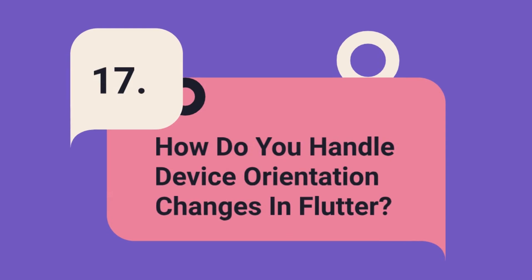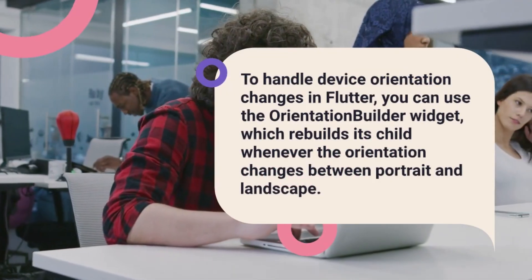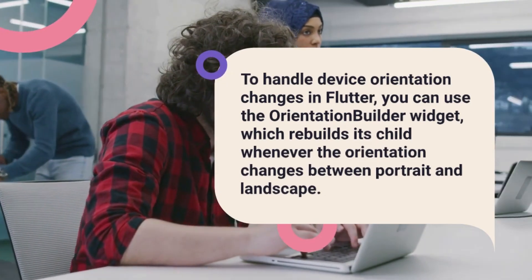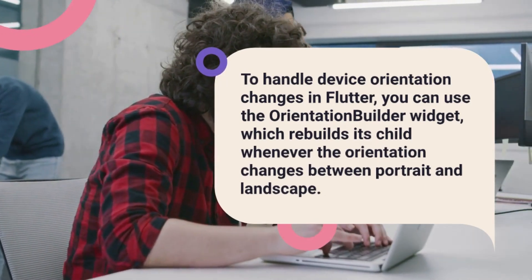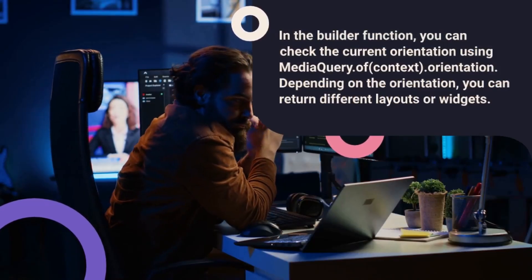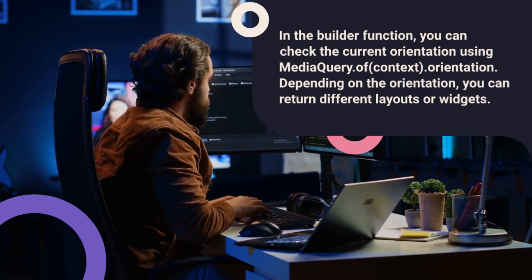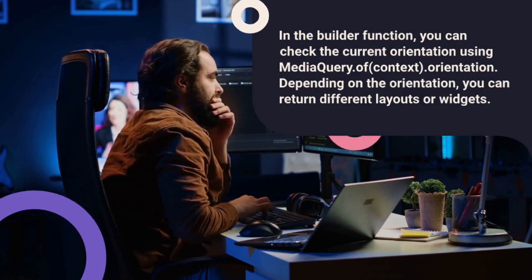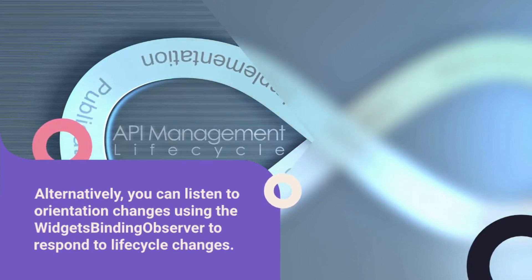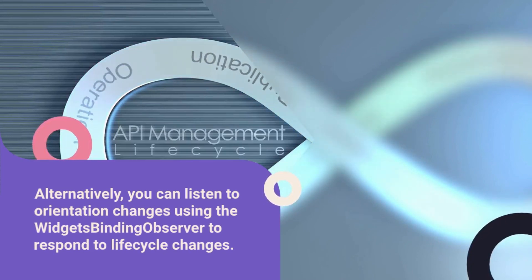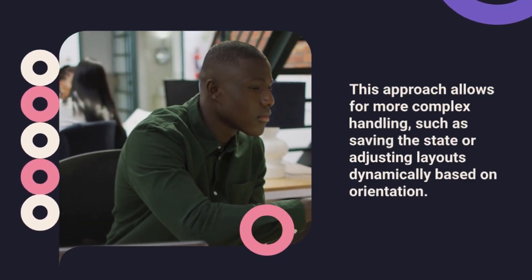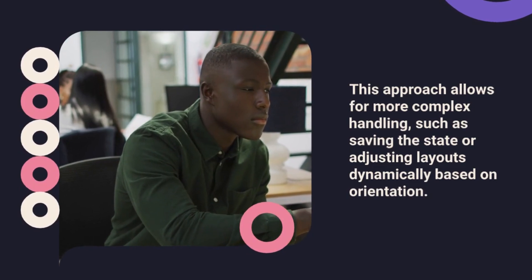Question 17: How do you handle device orientation changes in Flutter? To handle device orientation changes, you can use the OrientationBuilder widget, which rebuilds its child whenever the orientation changes between portrait and landscape. In the builder function, you can check the current orientation using MediaQuery.of(context).orientation. Depending on the orientation, you can return different layouts or widgets. Alternatively, you can listen to orientation changes using the widget's binding observer to respond to lifecycle changes, allowing for more complex handling such as saving state or adjusting layouts dynamically based on orientation.